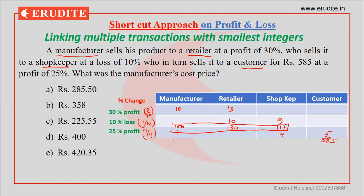At this point, what is the manufacturer's cost price? It would be 400. Now, given that the product is sold to the customer at 585 rupees — this 585 matches exactly, which means the manufacturer's cost price is 400. By this way, linking the data is highly possible and makes the solution straightforward.